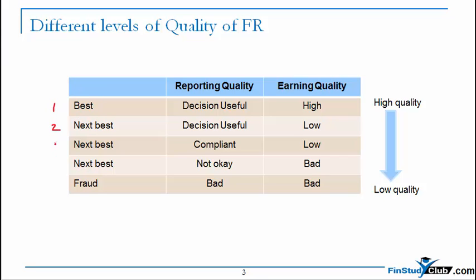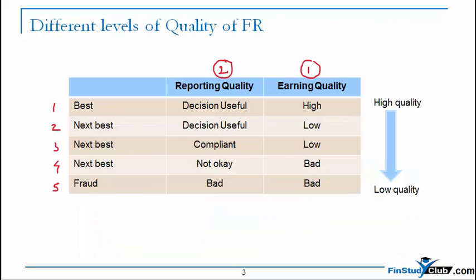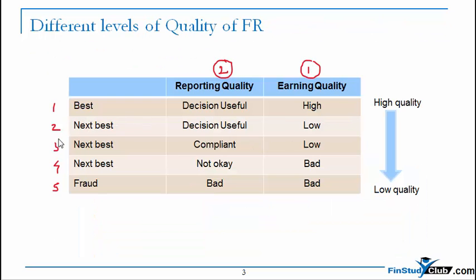Summarizing the quadrants table: earnings quality will precede reporting quality. The first quadrant is clearly the best scenario. The last scenario - both earnings and reporting quality bad - is quadrant three. The second, third, and fourth quadrants are the gray matter between white and black: earnings quality turns bad but reporting remains decision-useful (firm is bona fide explaining scenarios to the analyst). As reporting quality also deteriorates, the firm moves towards a worse scenario.